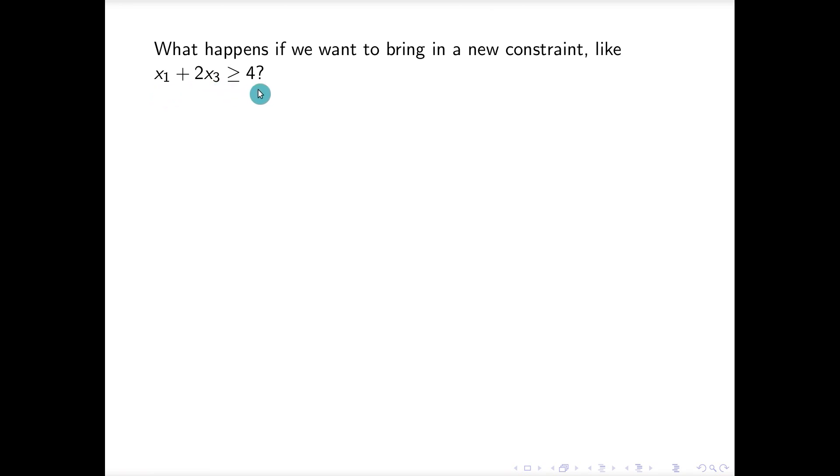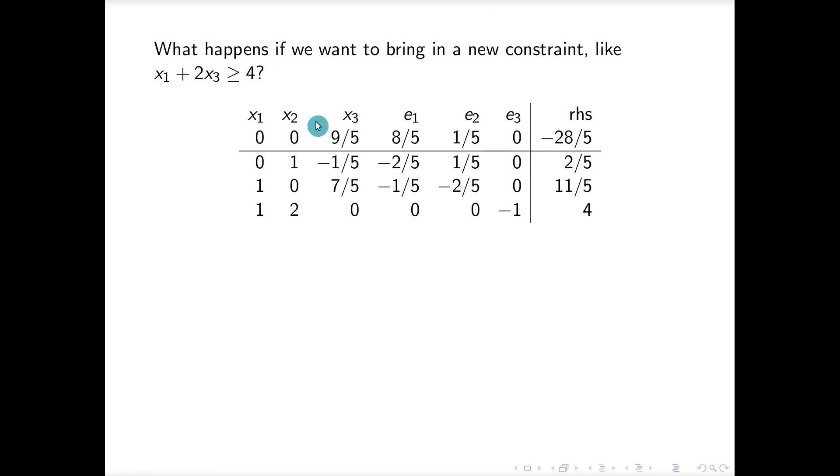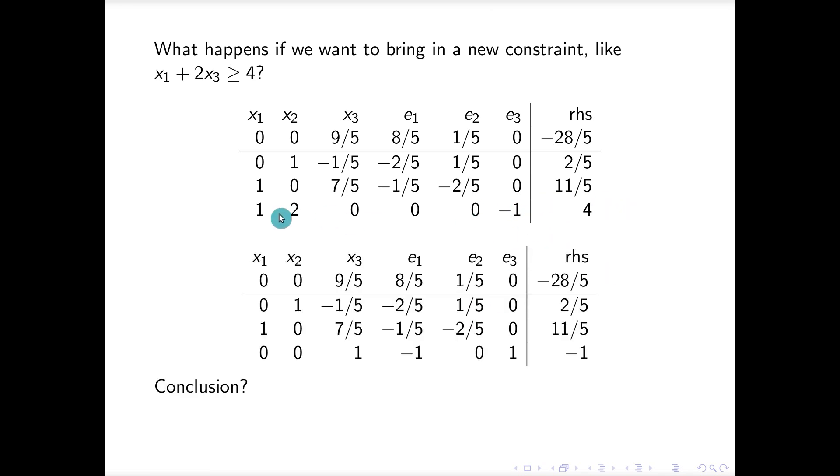Like x1 plus 2x3 is greater than or equal to four. Well, we can just pull that in. What's kind of nice about the dual simplex method is we don't have to restart from scratch. So let's write down our tableau that we have here and I'll bring in my new constraint. So this is for x1 plus 2x3, I'm going to need another excess variable and a four there. And now I don't have a feasible solution anymore, so what am I going to do? Multiply this row by minus one, and then I'm going to make these back into the columns of the identity. That takes a little bit of work there, but when we're finished we get this.